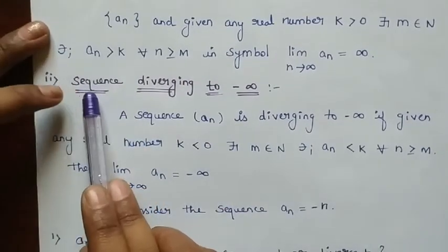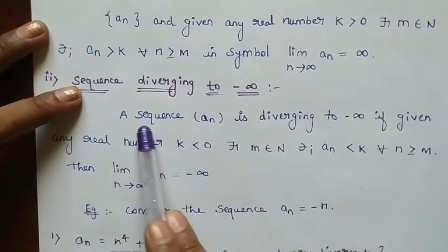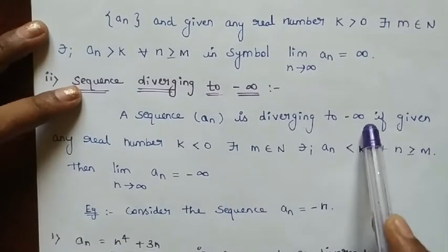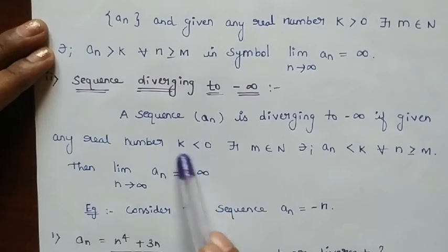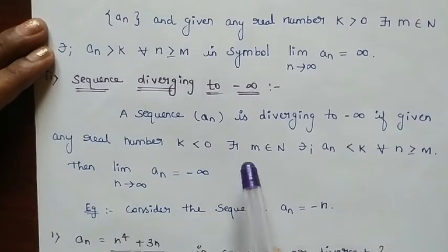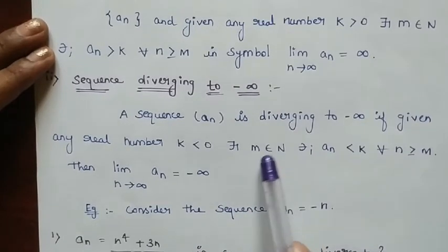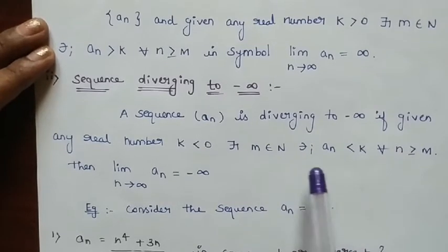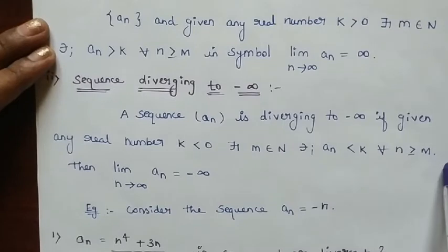Next we see: sequence diverging to minus infinity. In this case, the sequence AN is diverging to minus infinity if given any real number K less than 0 — that is negative terms — such that there exists M belonging to N, such that AN is less than K for all N greater than or equal to M.